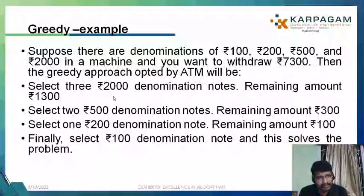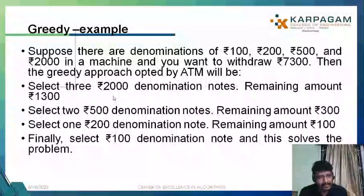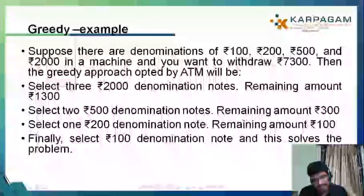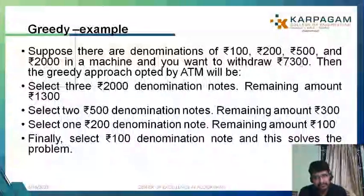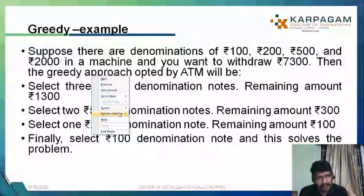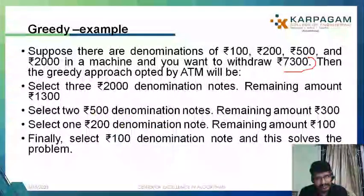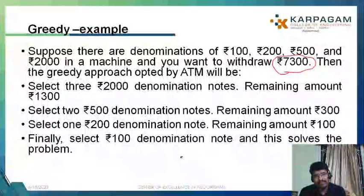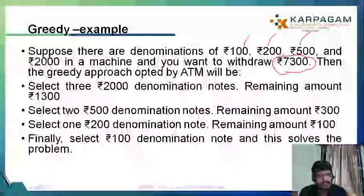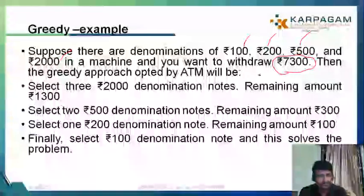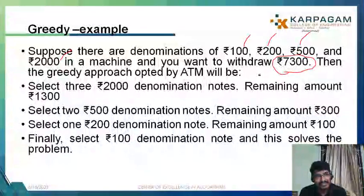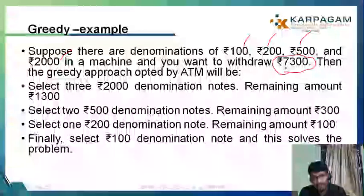These denominations are available in multiple proportions, and the problem says you want to withdraw a particular amount of 7300. The machine has n number of 100 rupee notes, n number of 200 rupee notes, and n number of 500 as well as 2000 rupee notes, so there is no deficiency in the denominations. But remember, it should give the least possible number of notes to equate to 7300.